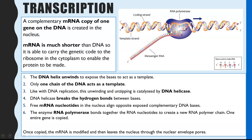We now have one of those strands exposed, ready to be the template. Within the nucleus there are free-floating RNA nucleotides — we can see the four options here. If they align opposite their complementary base pair on the exposed strand, they'll be able to stay in position. Then RNA polymerase joins all those nucleotides together by phosphodiester bonds, through complementary base pairing, so the RNA bases complementary to the DNA bases align opposite.